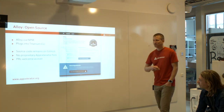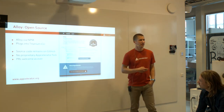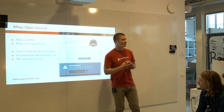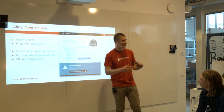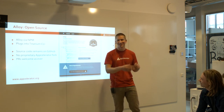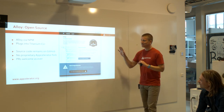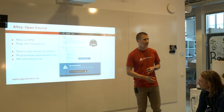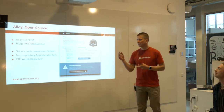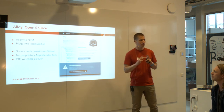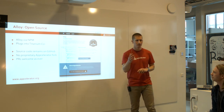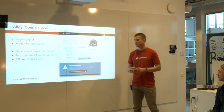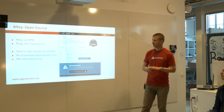The other major open source project we have is Alloy. About half of you are already using Alloy — for the rest of you, please use Alloy, not for my sake but for your sake — it will make your life much easier. The same is true for Alloy as for Titanium: you can still get it on NPM, it still plugs into the Titanium CLI, it's still on GitHub, and we don't have a separate version. We use exactly the same version and you can still contribute to it.